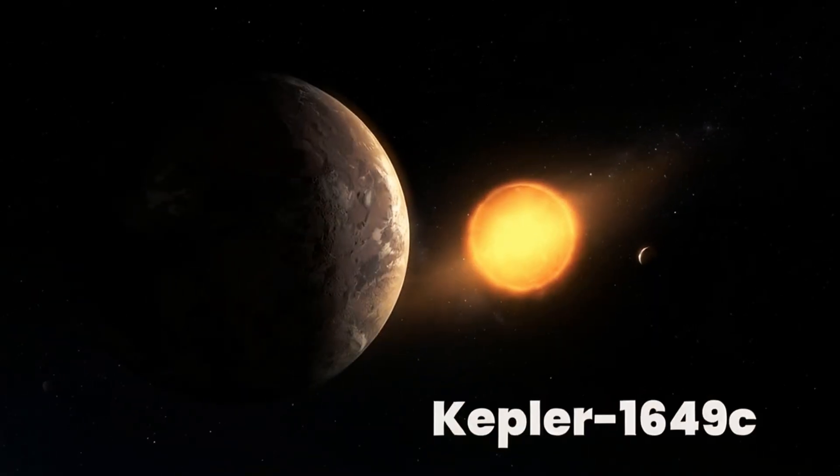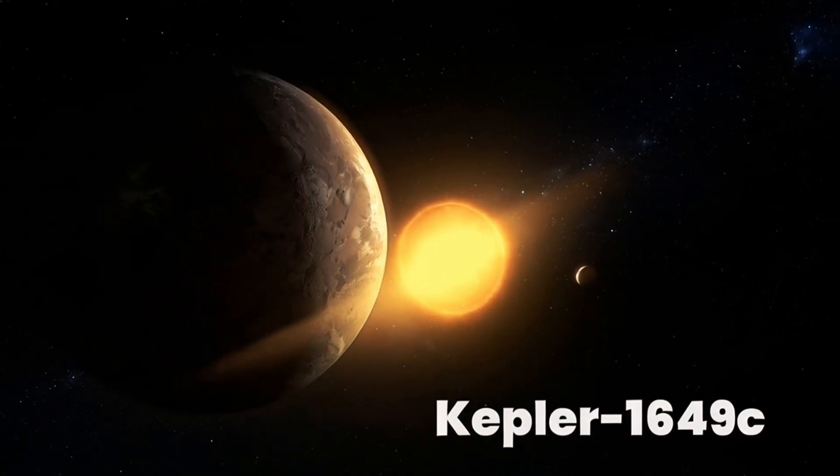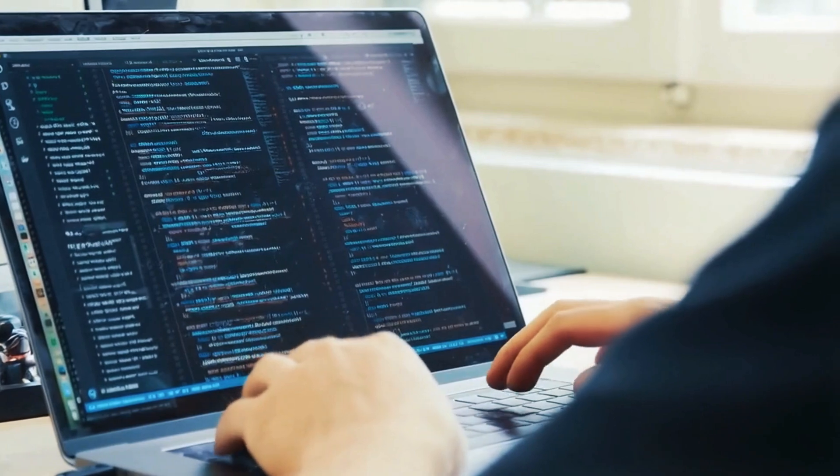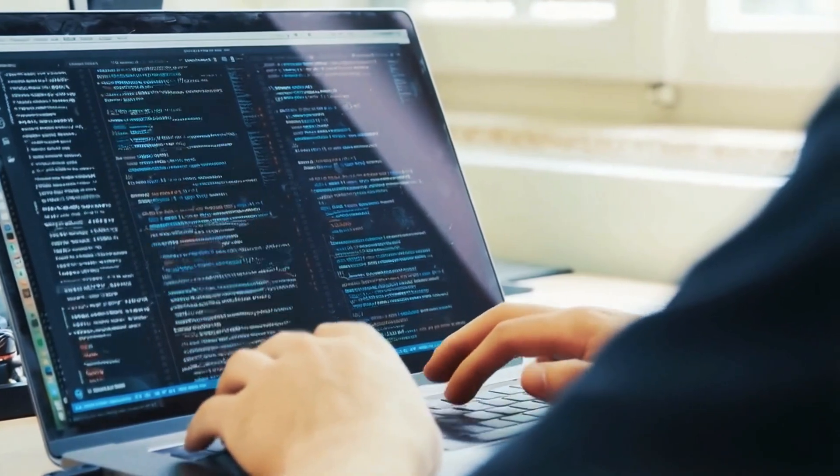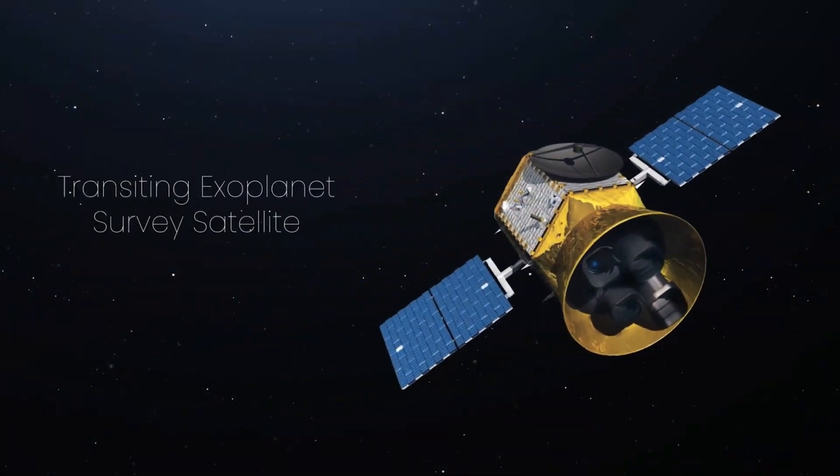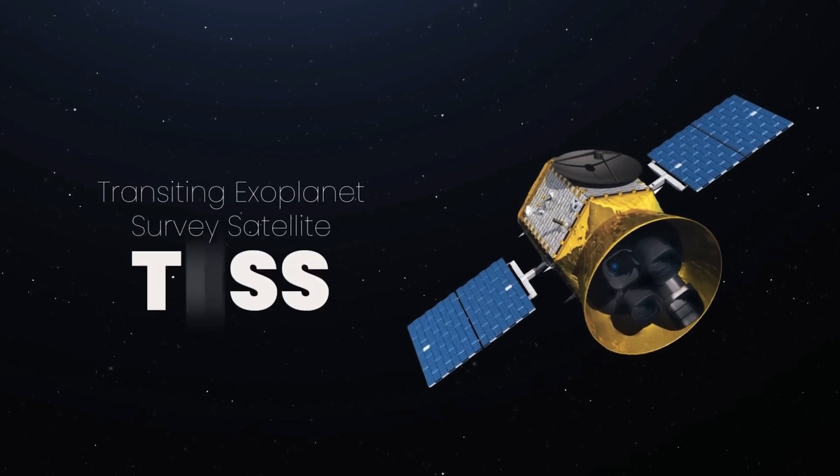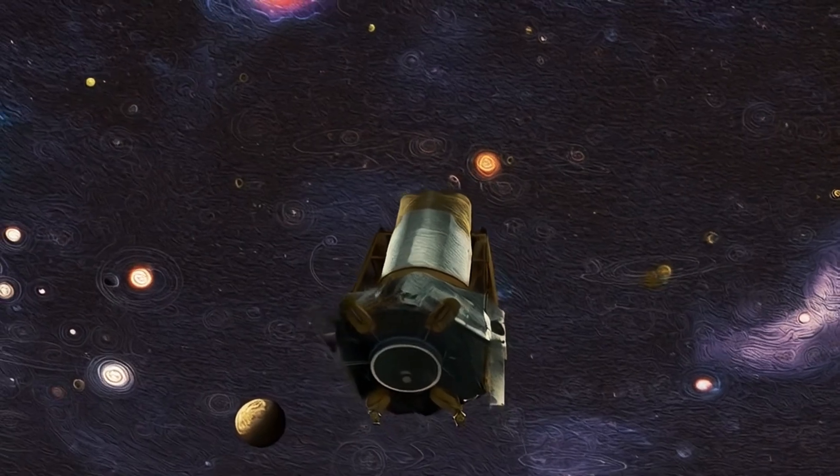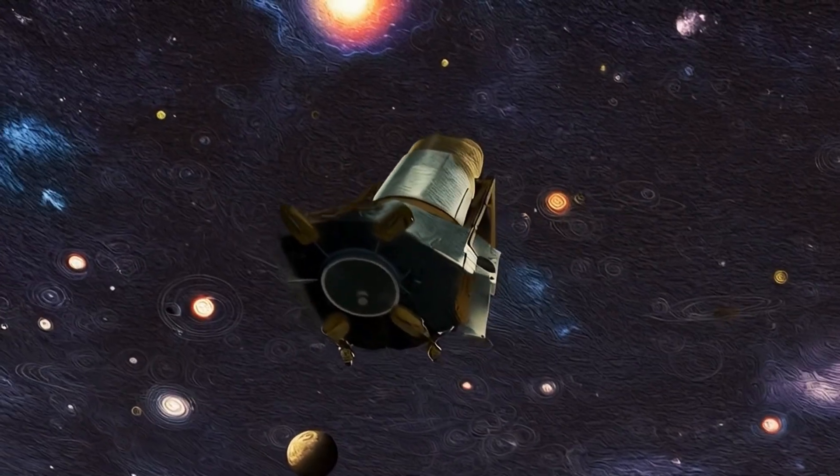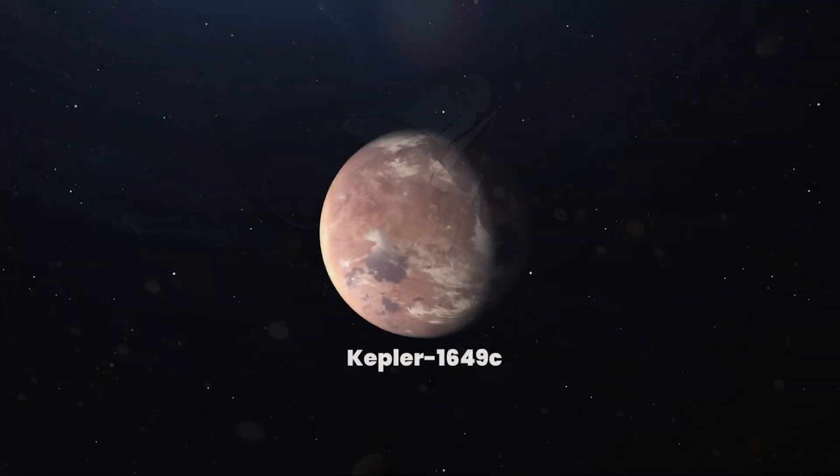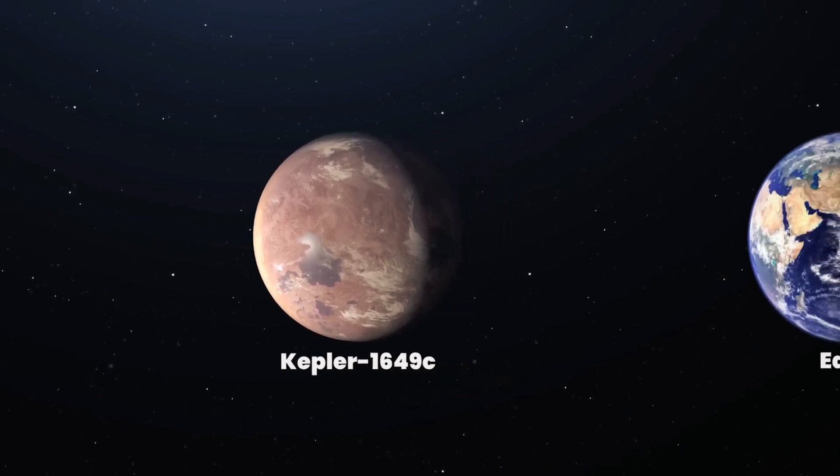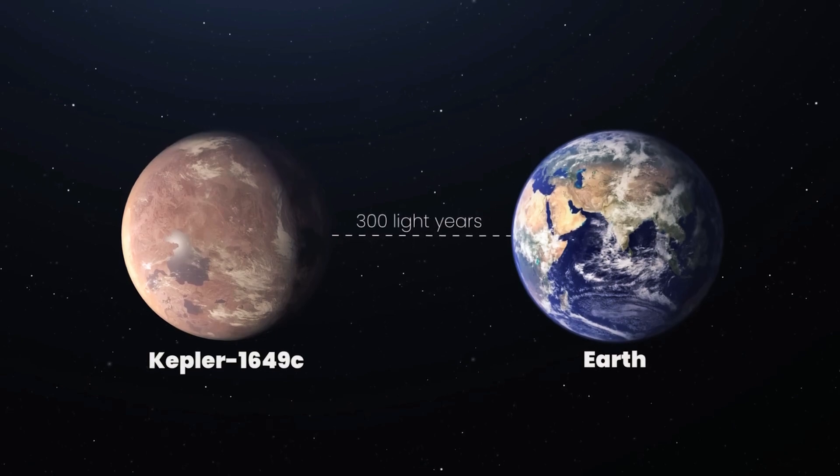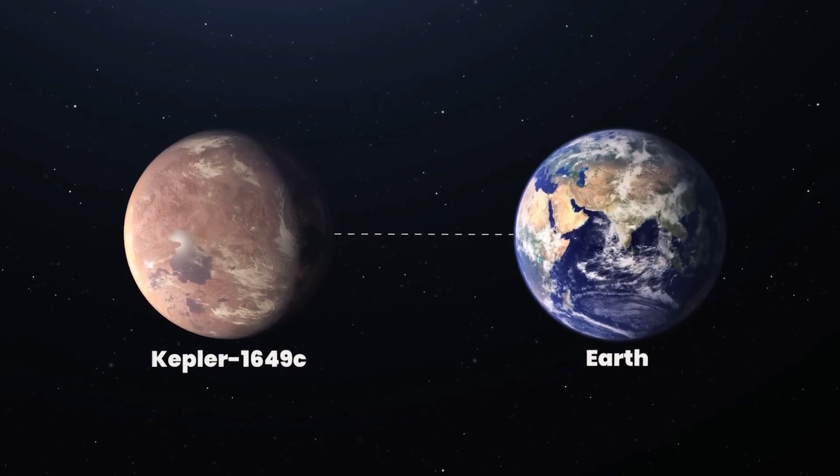One such planet is Kepler-1649c. In mid-2020, while combing through old Kepler data and matching it against new data from the Transiting Exoplanet Survey Satellite, or TESS, astronomers confirmed the existence of another exoplanet with very favorable conditions for life. Kepler-1649c, located 300 light-years from Earth, is very similar to Earth in size and estimated temperature.